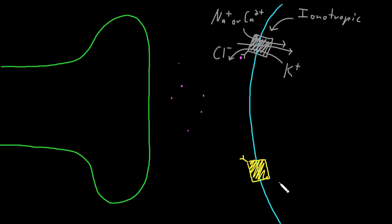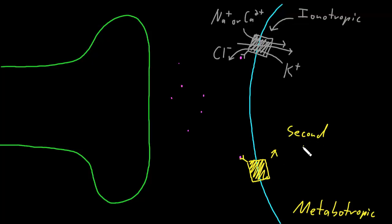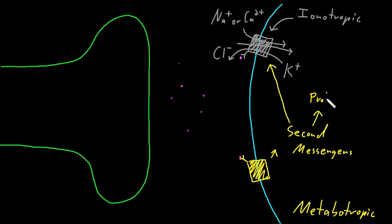The other big class of neurotransmitter receptors are called metabotropic. These are not ion channels. Instead, when their neurotransmitter binds to the receptor, they activate second messengers inside the neuron. There are a number of different types of second messenger systems that can be activated by metabotropic neurotransmitter receptors, and these second messengers can do a lot of different things. They can affect the behavior of ion channels, causing them to be more or less active, or they can change the activity of proteins inside the neuron. Some can even affect the activity of genes and change the pattern of gene expression inside neurons.